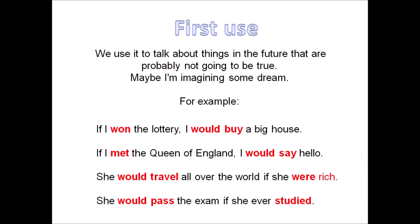So guys, let's go to the first one. We have two uses of this second conditional. The first use is to talk about things in the future that are probably not going to be true. Maybe imagining some dream. For example, if I won the lottery, I would buy a big house. Guys, but I won the lottery. Why? Because it's really difficult. The chances are almost imperceptible.